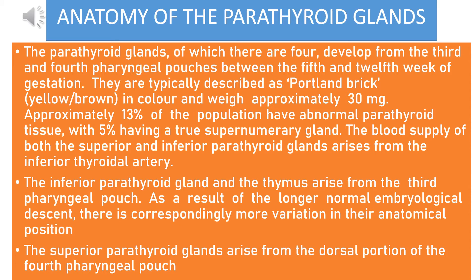We will start our lecture by talking about the anatomy of the parathyroid glands. The parathyroid glands, of which there are four, developed from the third and fourth pharyngeal parts between the fifth and twelfth week of gestation. They are typically described as Portland Brick, yellow-brown in color, weighing approximately 30 mg. Approximately 13% of the population have abnormal parathyroid tissue, with 5% having a true supernumerary gland. The blood supply of both superior and inferior parathyroid glands arises from branches of the inferior thyroid artery.